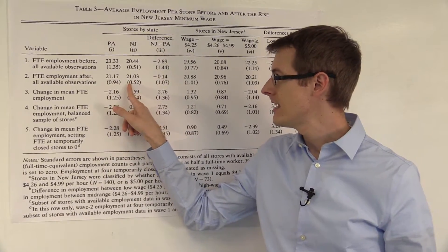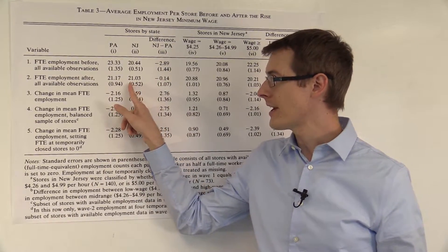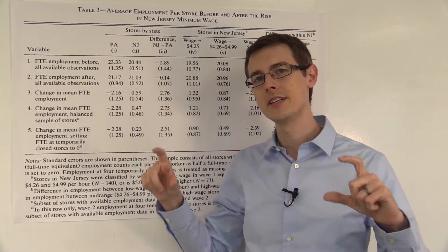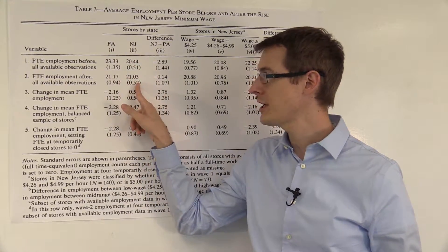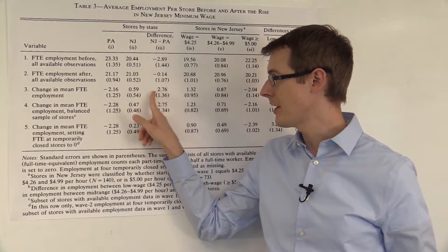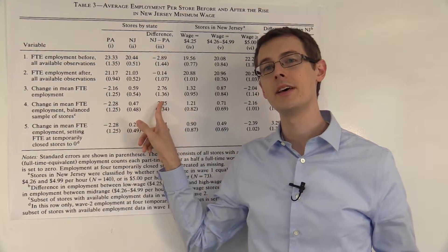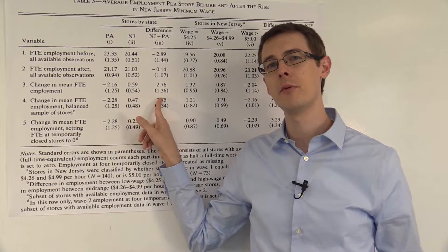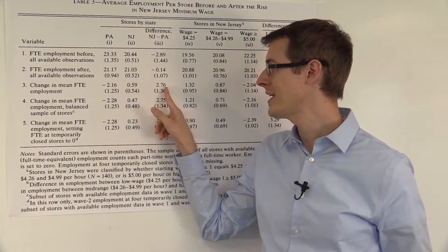So that suggests that if we look at the difference between the two differences of New Jersey's change before and after, and then subtract out the common trend from Pennsylvania, we get this number here, our difference-in-difference estimate of the causal effect of the minimum wage on employment: 2.76.